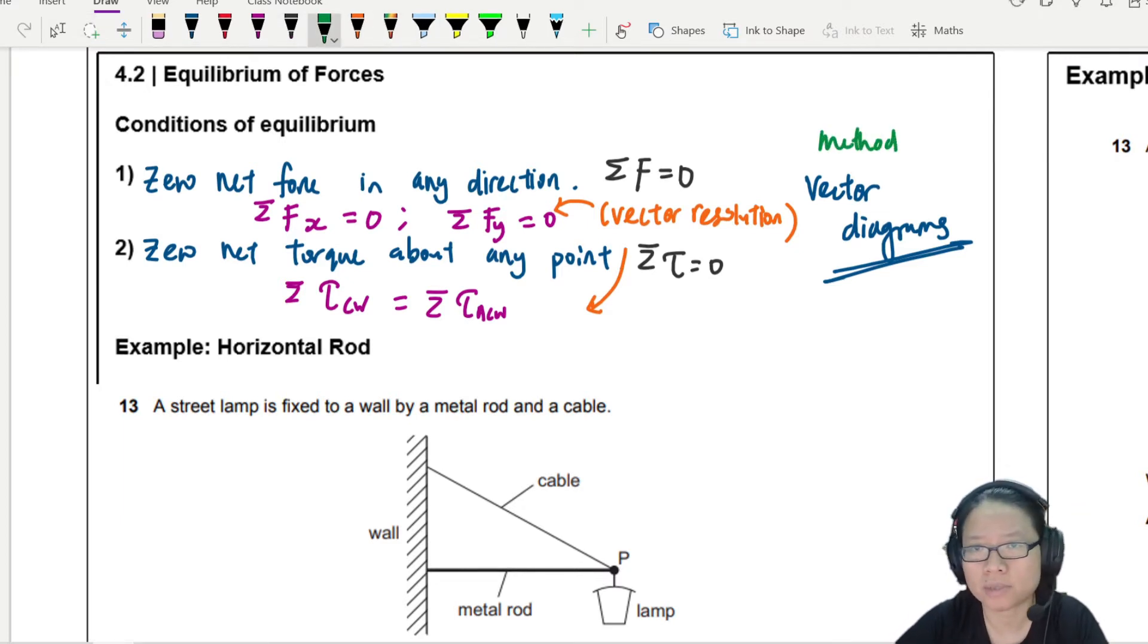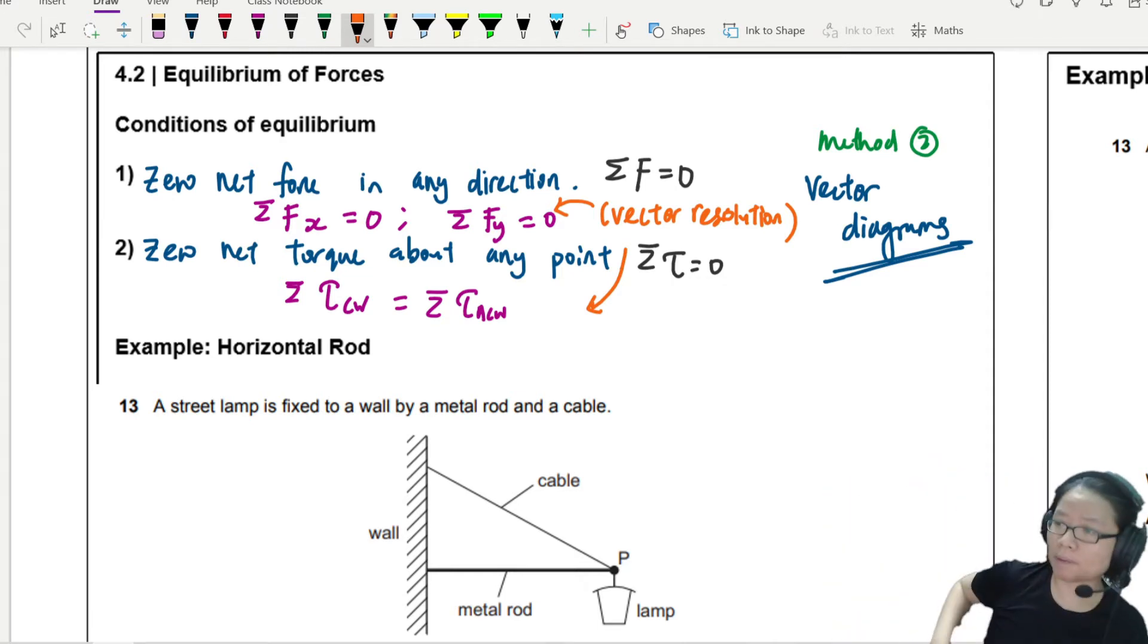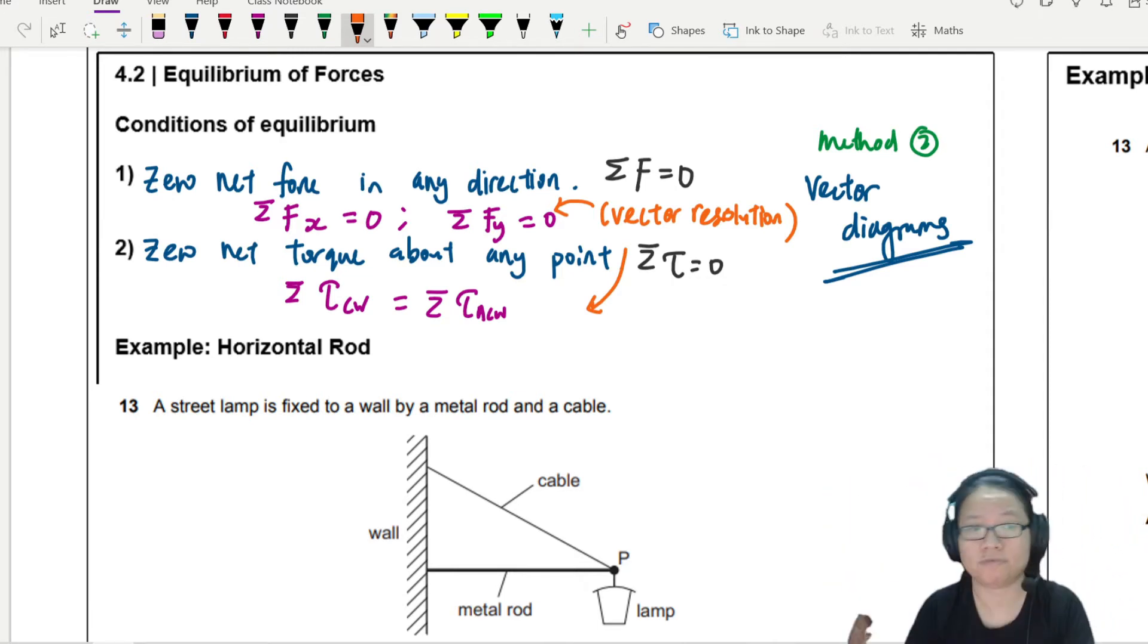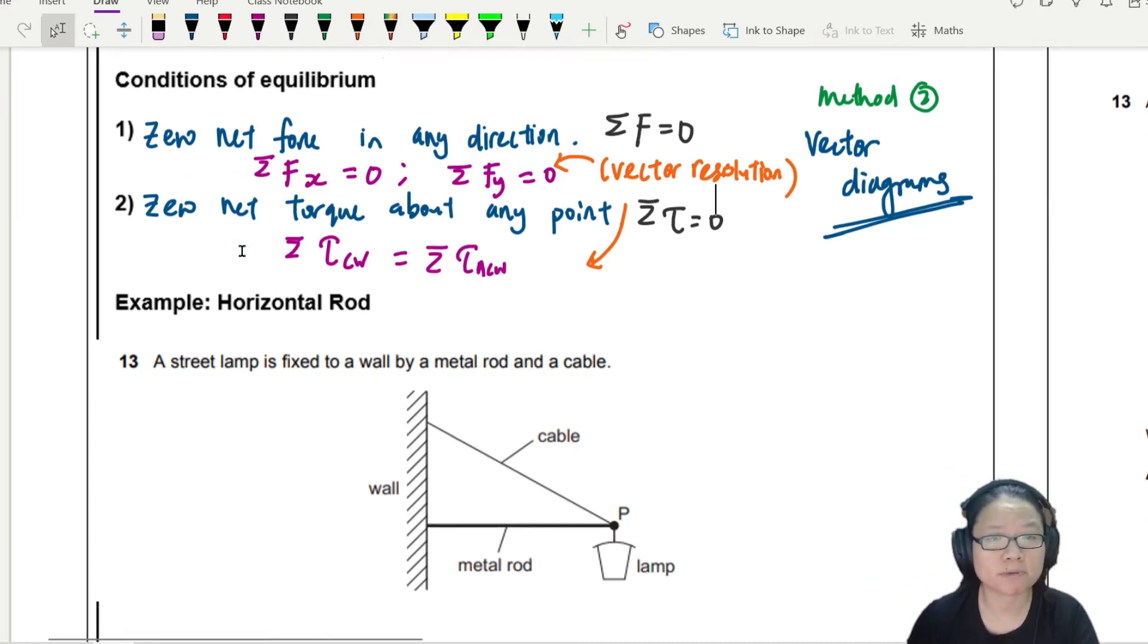So that will be the second method. And I want to point out that knowing one method generally is not good enough. But the one that has more quantitative power is vector resolution, meaning you can split the vectors. We have done this before in your chapter one, but I want to apply some vector diagrams in this video just to show you how to draw that. So let's look at the first example.